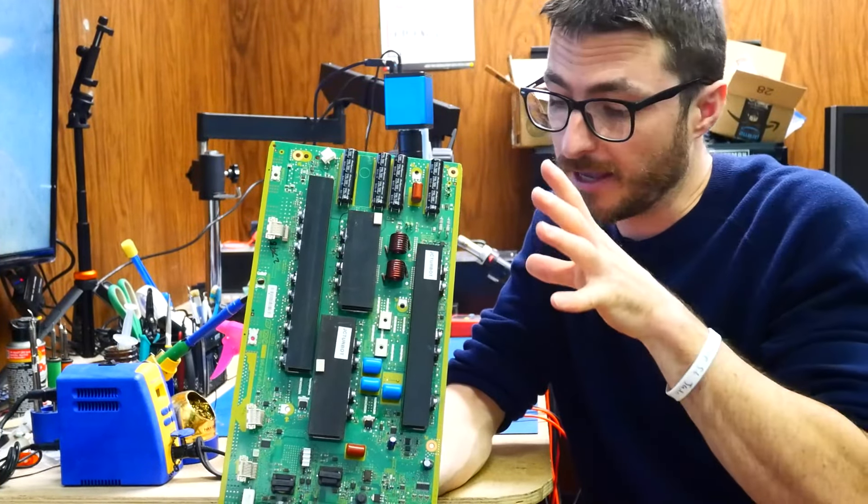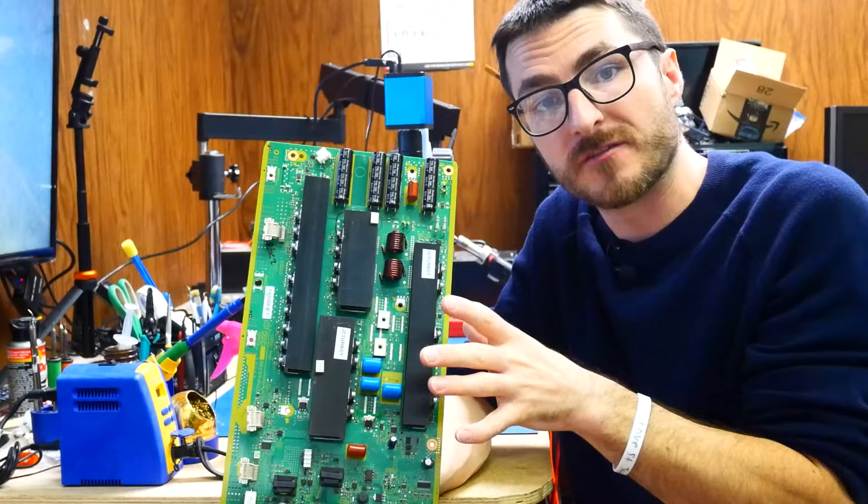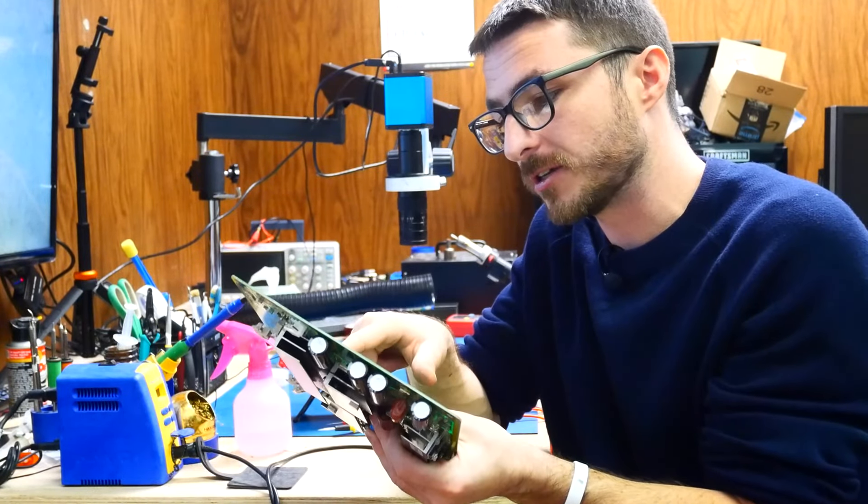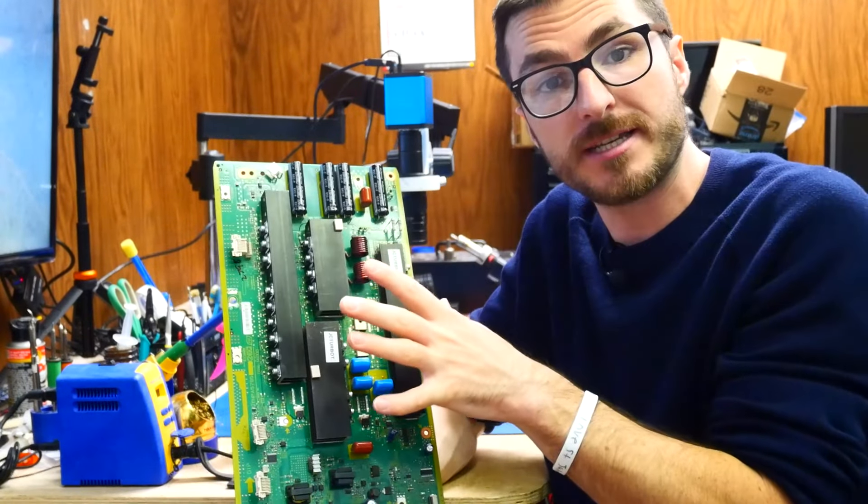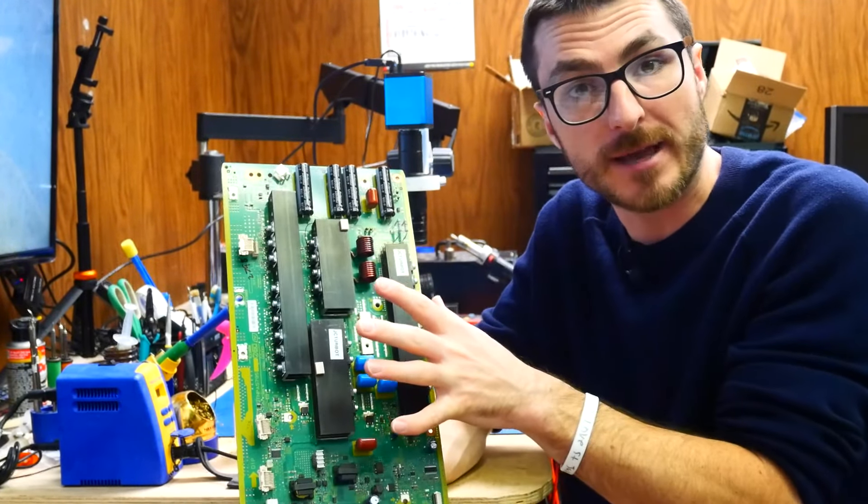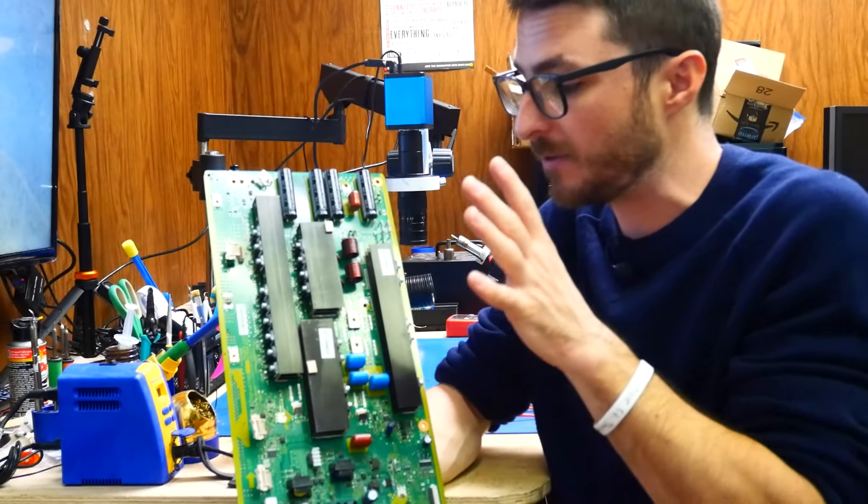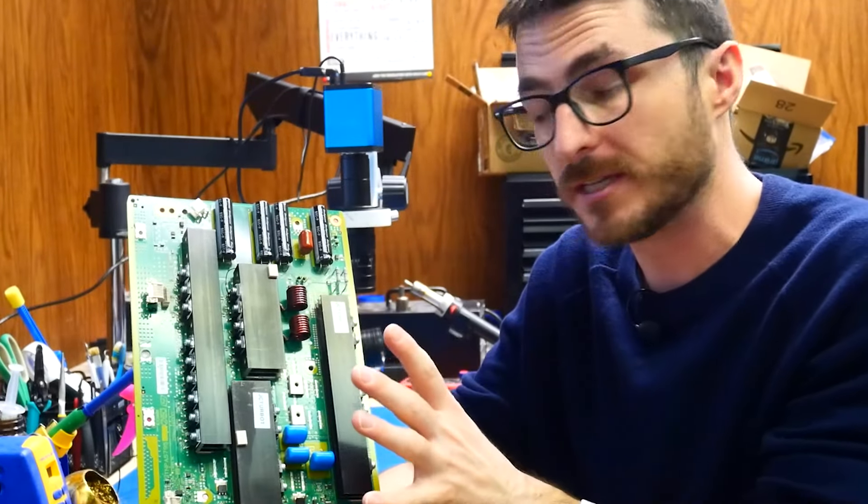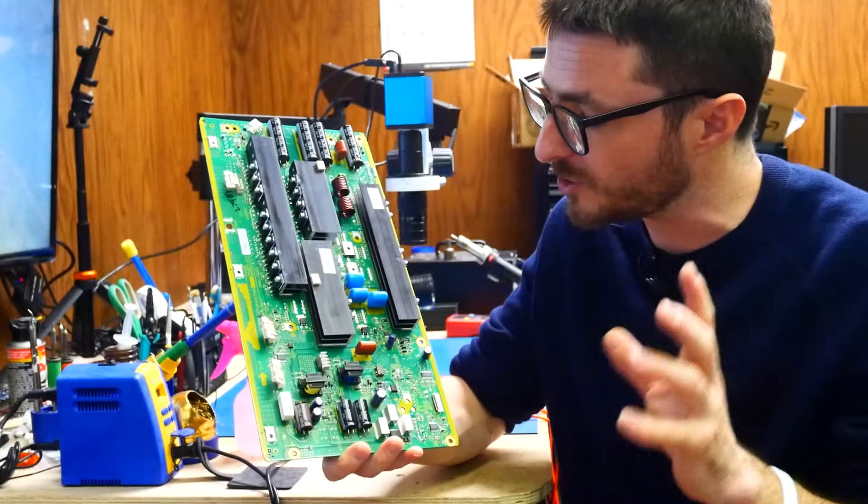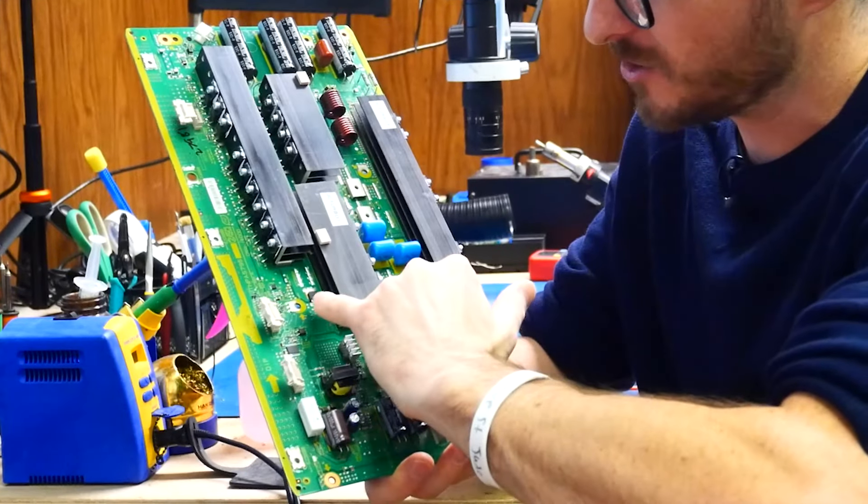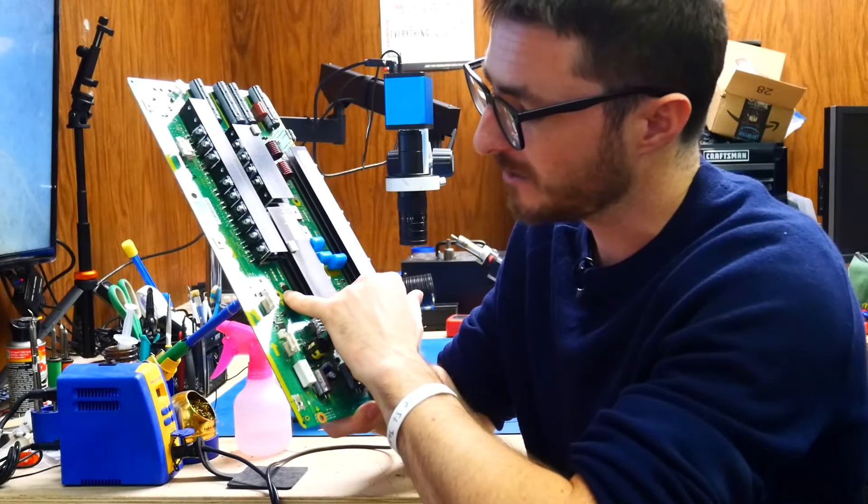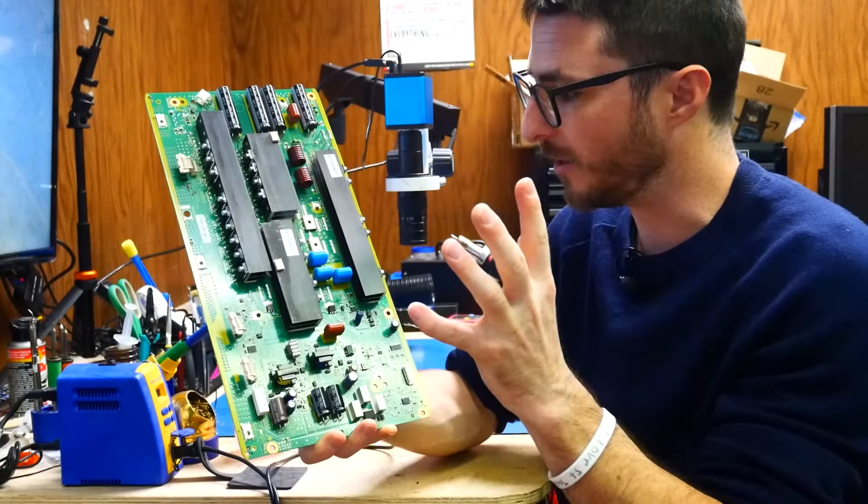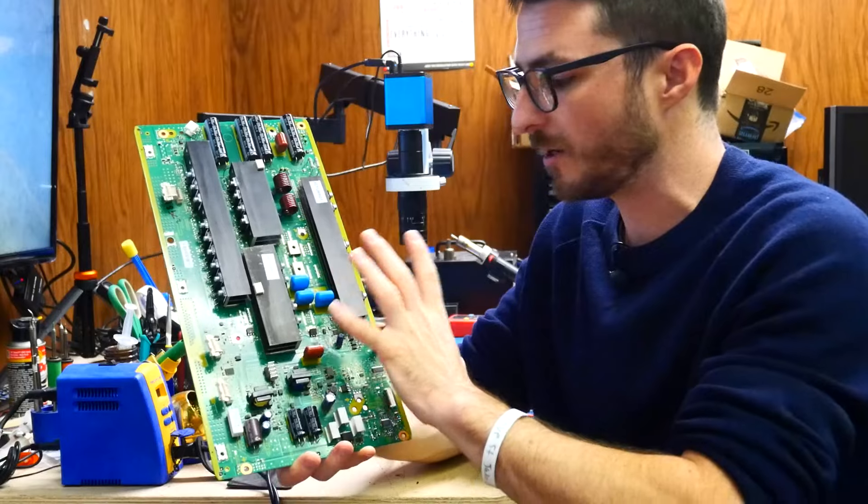One thing I do want to mention is this board has actually already been fixed. I did notice that there are some solder joints that are new and looking more into it, I realized this is actually a warranty. So we have actually fixed this board in the past. This has been sent back for warranty because it failed again. So this is a second repair. We're going to do some further checks and discover what else could be going on.